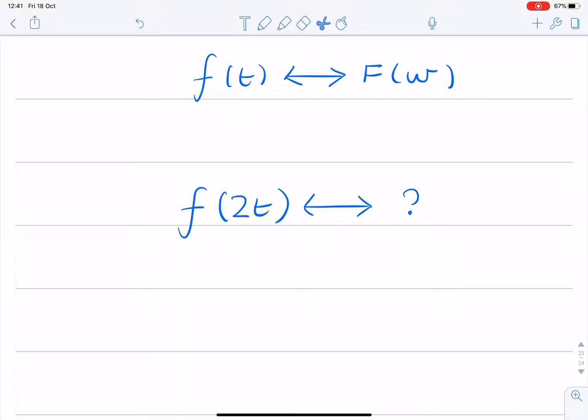In this question, we're given an arbitrary pair of functions, f of t in the time domain and F of omega in the frequency domain, and we're asked for the Fourier transform of f of 2t. So the only thing that's changed is that the independent variable has been multiplied by 2. So we have a compressed version of the function f of t. We don't know what the function is, but it doesn't matter. We want the answer in terms of uppercase F of omega.